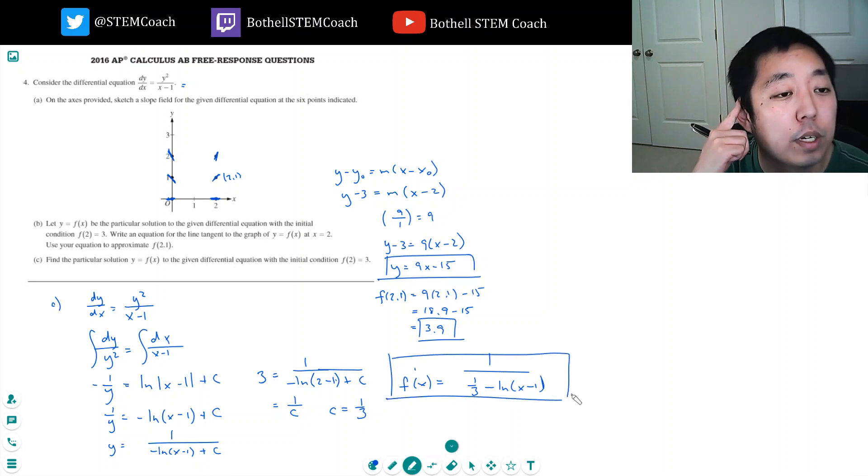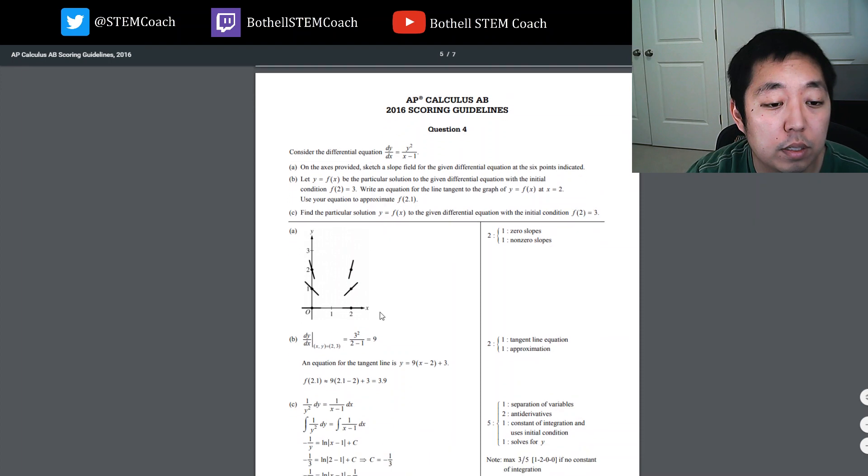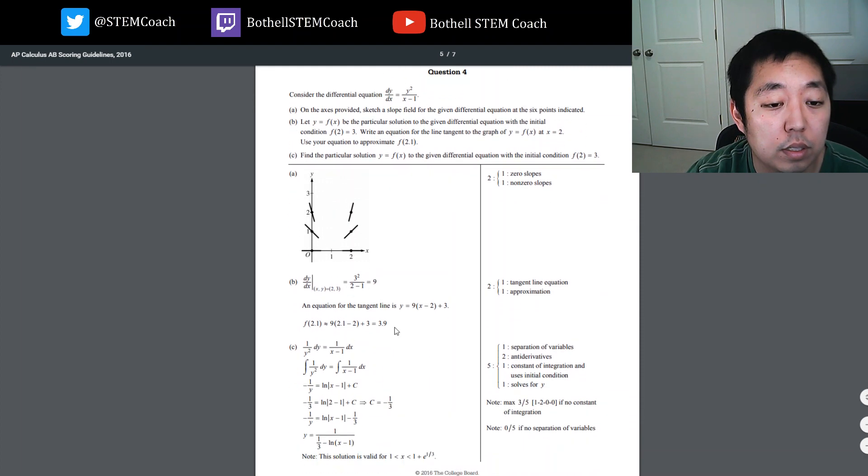And I believe that should be correct. Just double check that I did all that right. Yep. Okay. That was a quick one. Let's look at the scoring for that one. These look right. 3.9 and that equation is right.